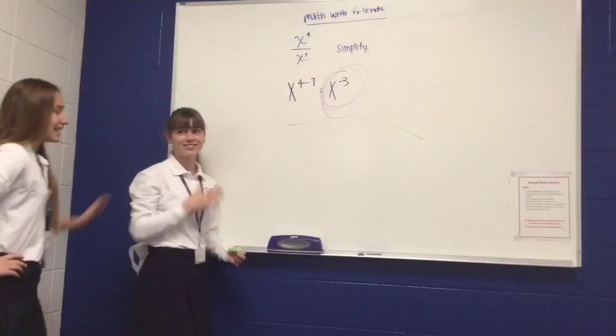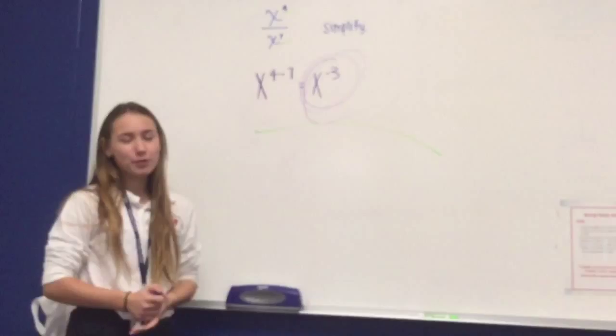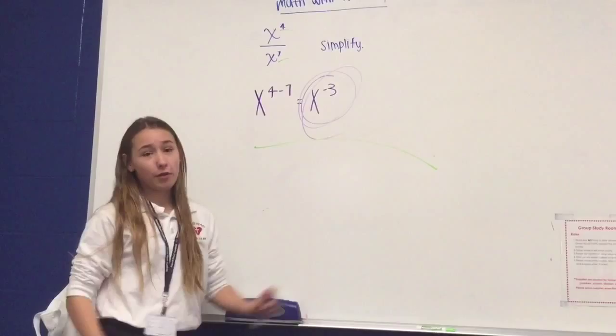Okay, so one of the common mistakes everybody makes is they have their exponents negative. You can't do that. Always have your exponents positive. So, she's not quite finished with this problem. She did her math right, but she still has to do something. She has to change the negative exponent to a positive exponent.